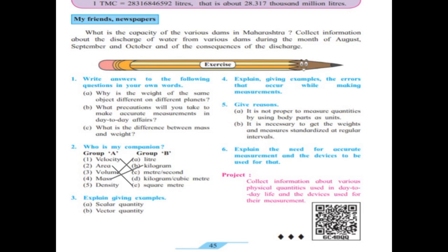Mass - kilogram. Density - kilogram per cubic meter.